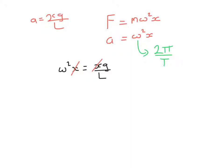Okay, so what I can do is I can make the two things equal to each other. What I find is that the x's cancel straight away. So I get omega squared is equal to g over L.